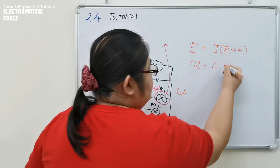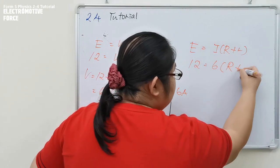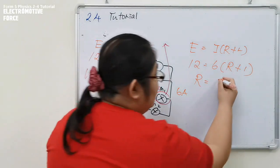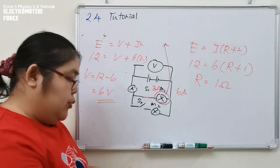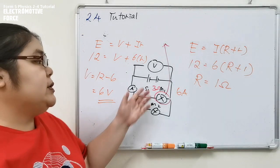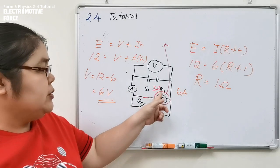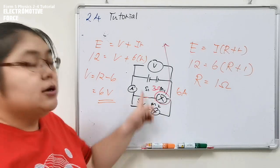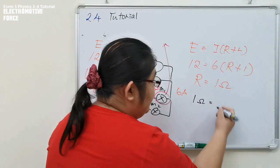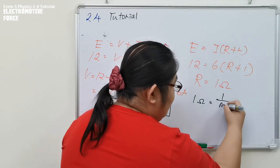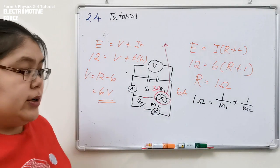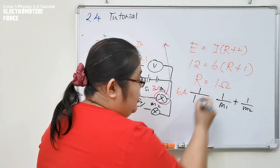From here EMF is 12, current is 6, small r we know is 1. So we find the total R is 1 ohm. 1 ohm is not yet the final answer. We still need to separate. This is a parallel circuit. So 1 ohm represents 1 over M1 plus 1 over M2.